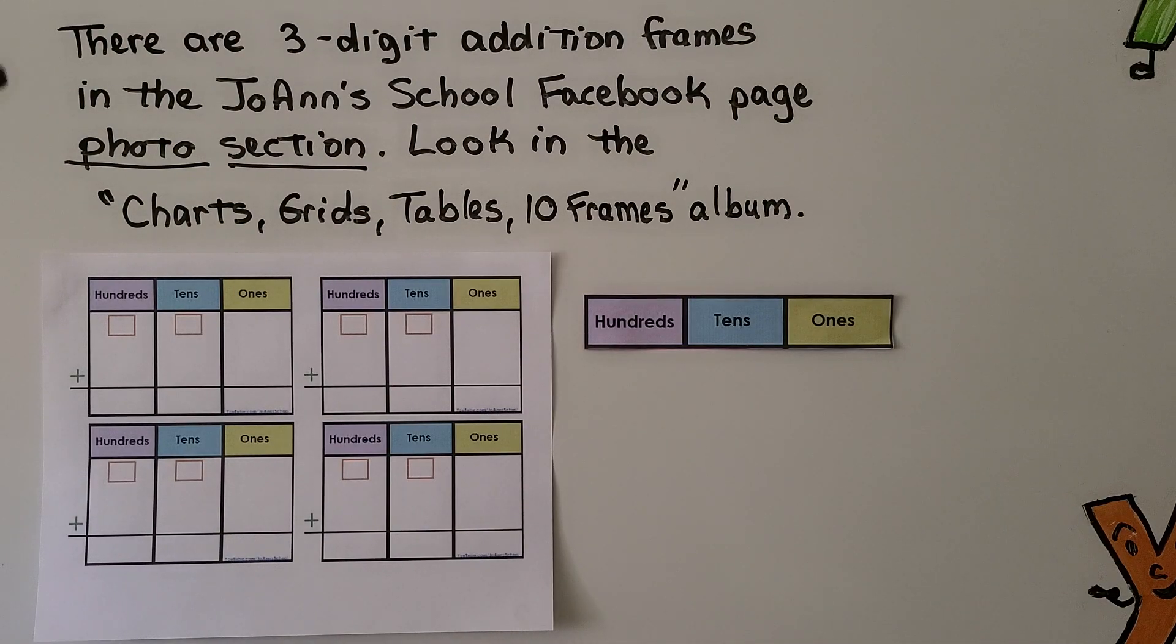I wanted to let you know that there are three digit addition frames in the Joanne School Facebook page photo section. If you look in the charts, grids, tables, 10 frames album, there's a lot of albums you have to click on see all. I also have these headers that you can just use a sheet of paper instead of printing these out. And you can write your numbers below here and maybe draw the lines to come down.